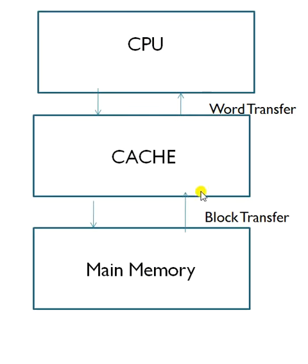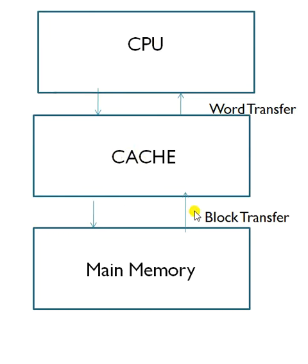Just as you can see in the diagram, when data is transferred between CPU and cache, it is called word transfer. When data is transferred between cache and main memory, it is called block transfer.